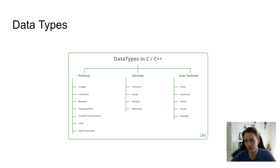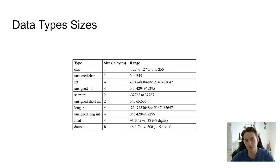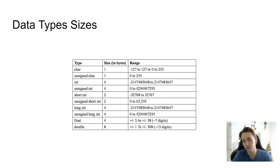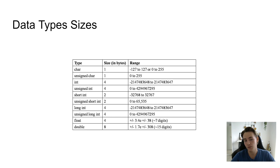Then of course there are user-defined types — classes and structures. We have classes in C++ as an object-oriented programming language, and we're going to use classes a lot in later videos. The sizes of data types are very important because they make your program faster and more memory efficient. For example, an integer takes up four bytes in memory and has a corresponding range. If your number won't exceed around 32,000, you can use a short integer, which only takes two bytes — making your program more memory efficient.